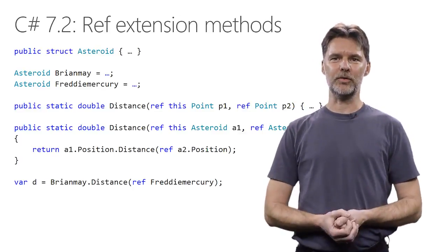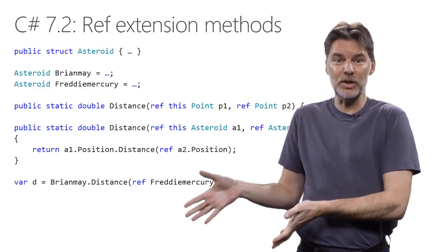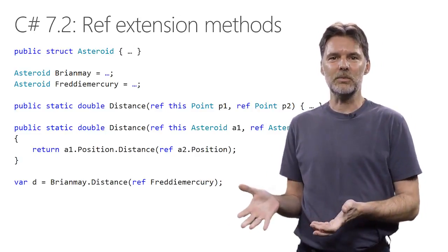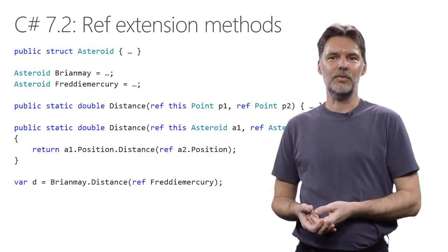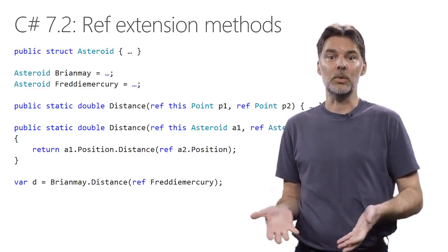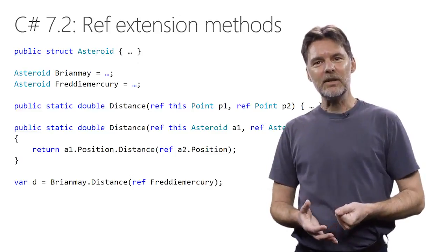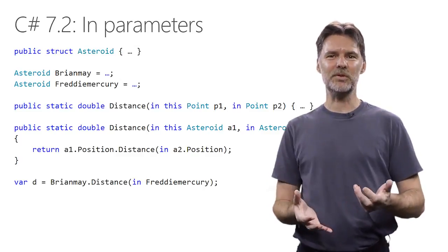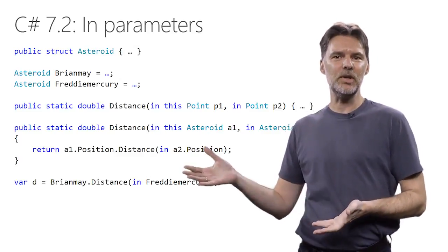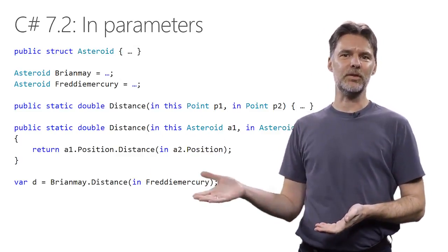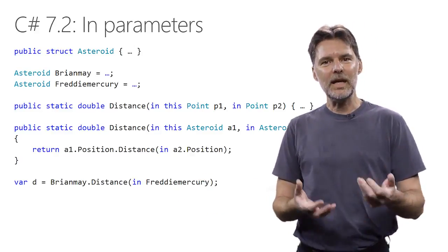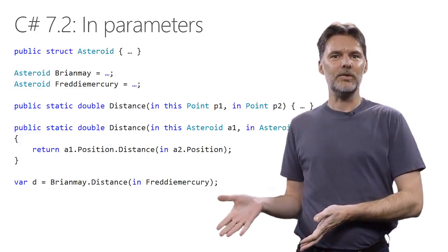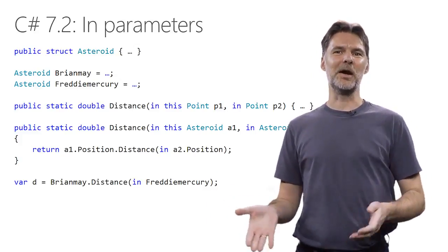One problem with ref parameters though is that they allow the method to modify the original struct value. That's not always what you want. The caller may not want to entrust the method with this ability, and if the argument structs are read-only, then it won't even work. So for this reason, we've added a new parameter passing mode to C#, namely, in parameters. In parameters, they're like ref parameters, except that they're read-only inside the method, and they cannot be modified. So they're kind of the opposite of out parameters really. Out parameters are required to be modified by the method, whereas in parameters are required not to be modified by the method.